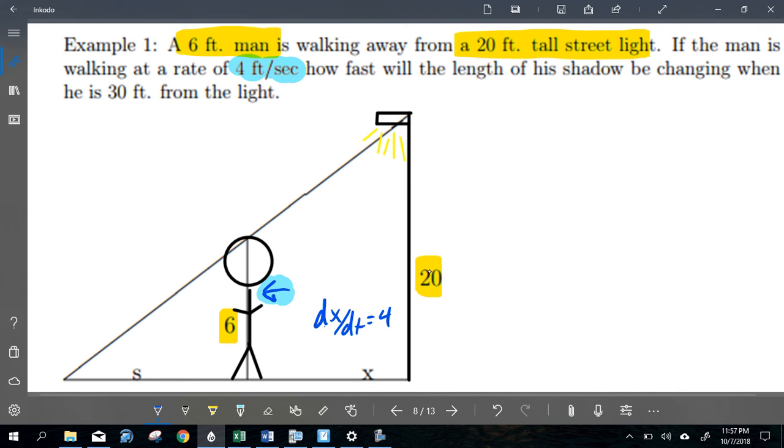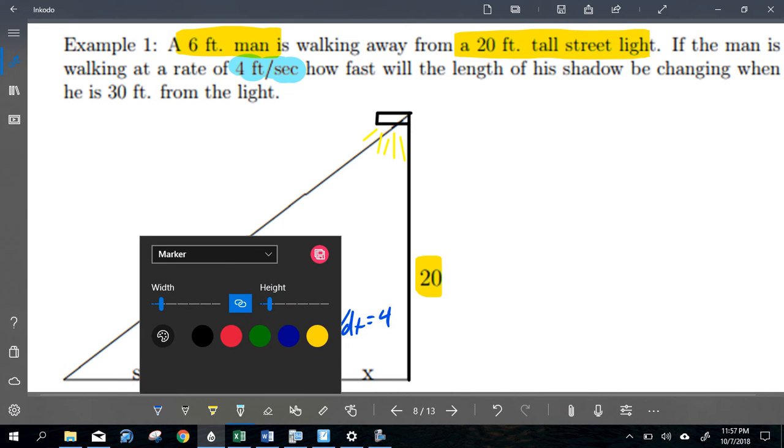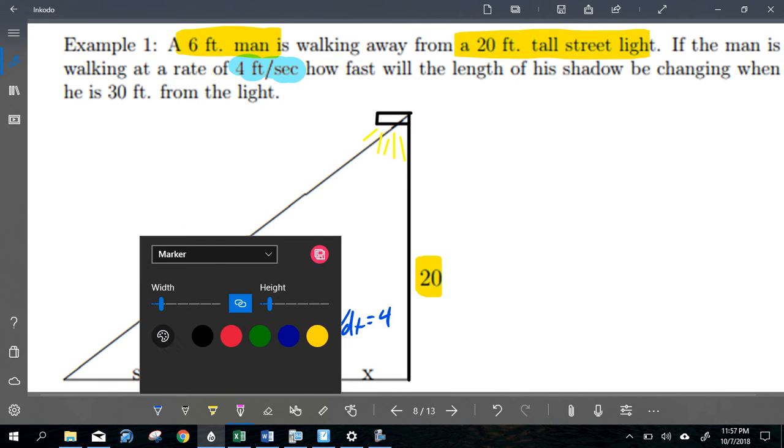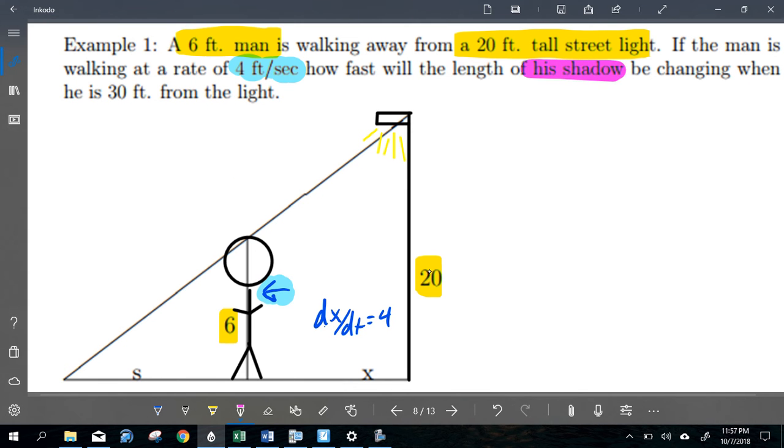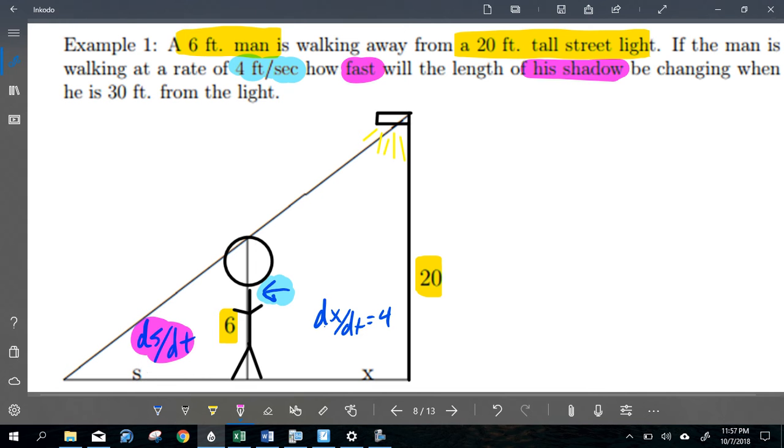How fast will the length of his shadow, so how fast will the length of his shadow, or in other words, S. How fast will it change? And so our ultimate job here is to find the change in S over time. That's the ultimate goal. We'll be changing when he's 30 feet from the light, and so 30 feet from the light is X equals 30.